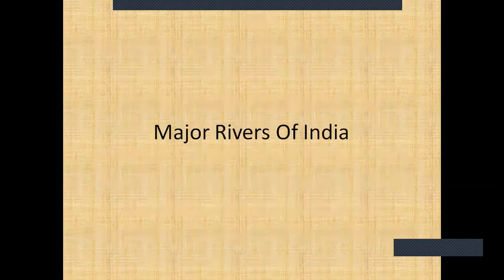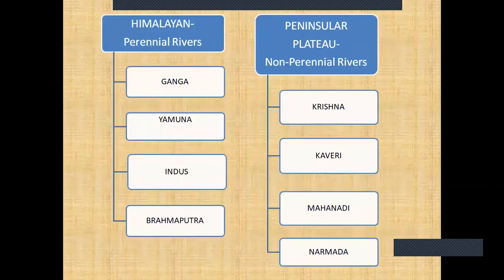Major Rivers of India. We are going to learn the river map as well as the exercises. Himalayan rivers are called Perennial Rivers, and Peninsular Plateau rivers are called Non-Perennial Rivers. Perennial rivers — such as Ganga, Yamuna, and Brahmaputra — are permanent in nature, while non-perennial rivers are seasonal in nature.